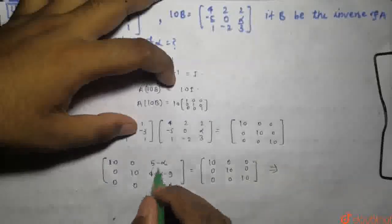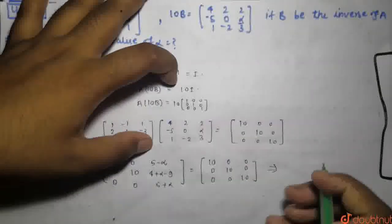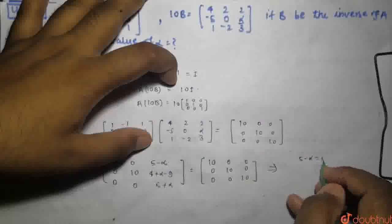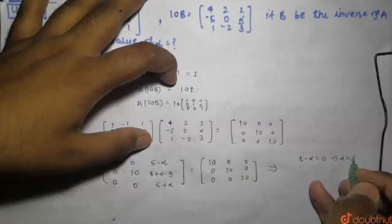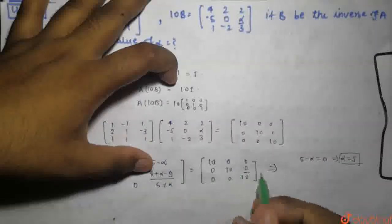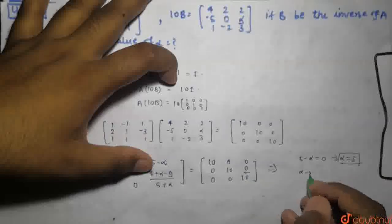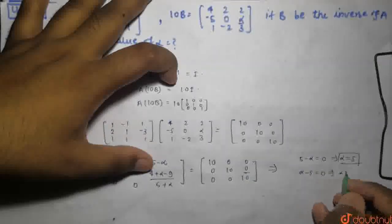Comparing to the identity matrix [10, 0, 0; 0, 10, 0; 0, 0, 10], we get 5 minus alpha equals 0, which implies alpha equals 5.